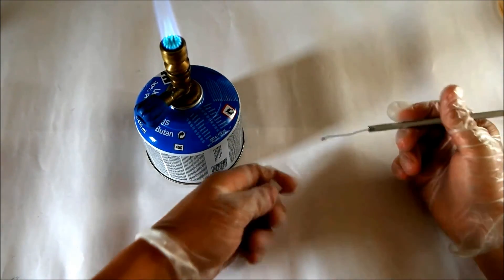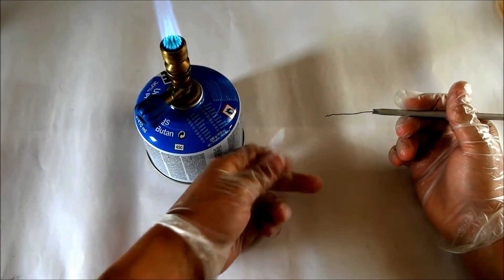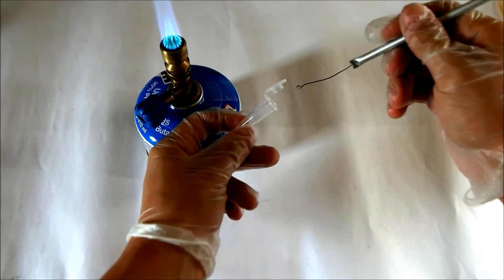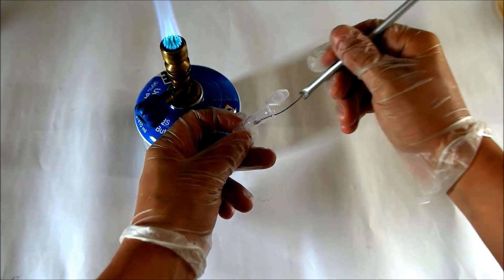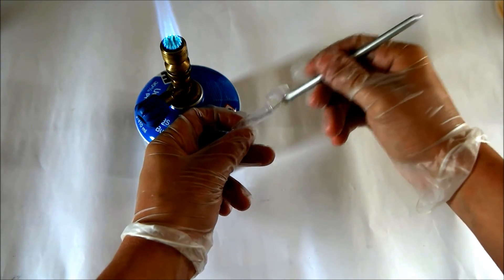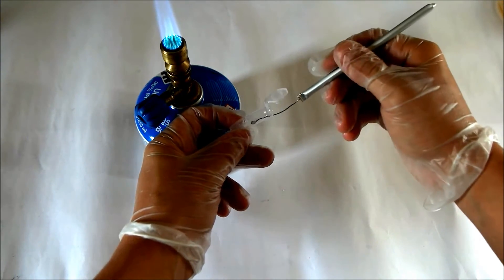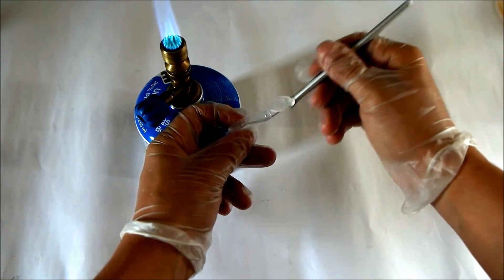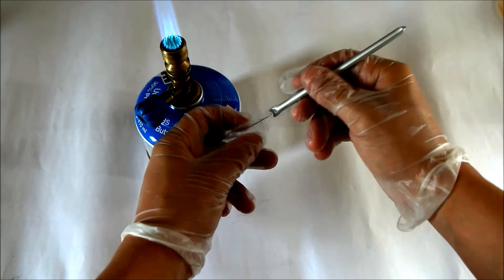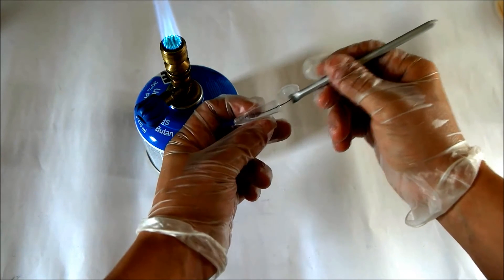Now try to get your bacteria in the eppendorf tube with the sodium chloride solution. This needs a bit of practice, but you can wait a bit to let them dissolve in the solution, and then that should be done.